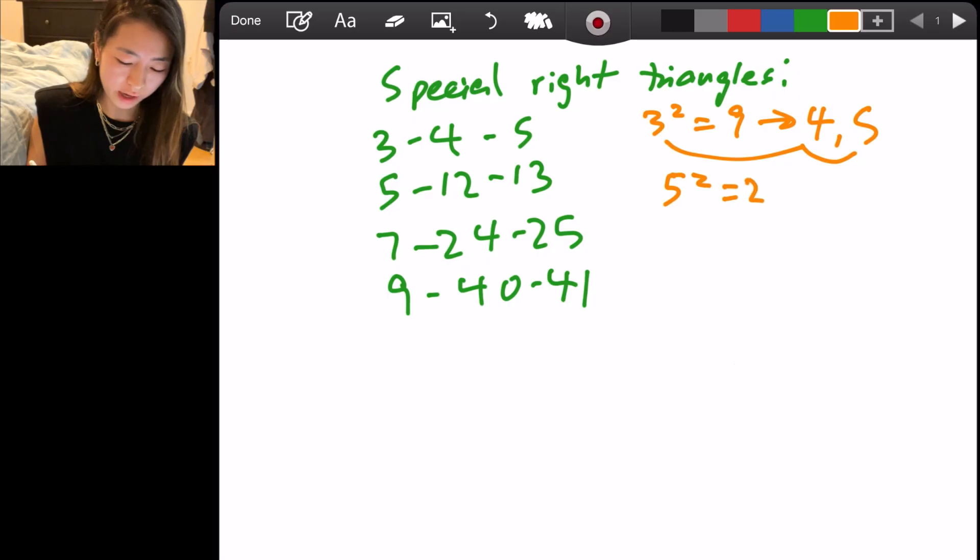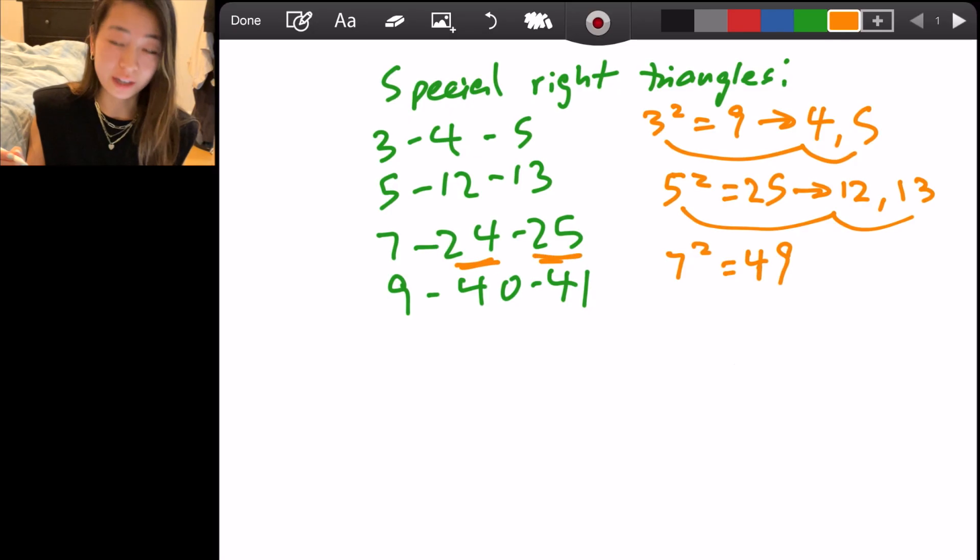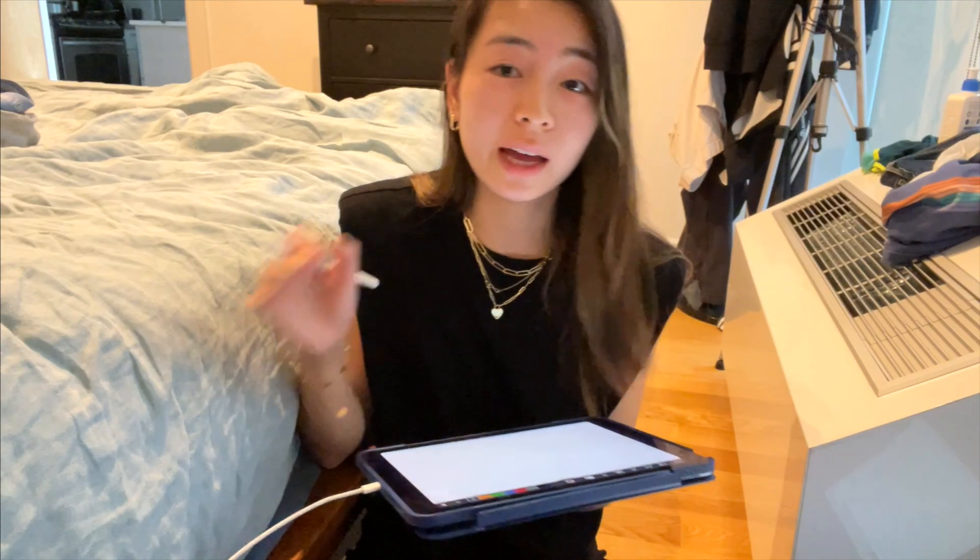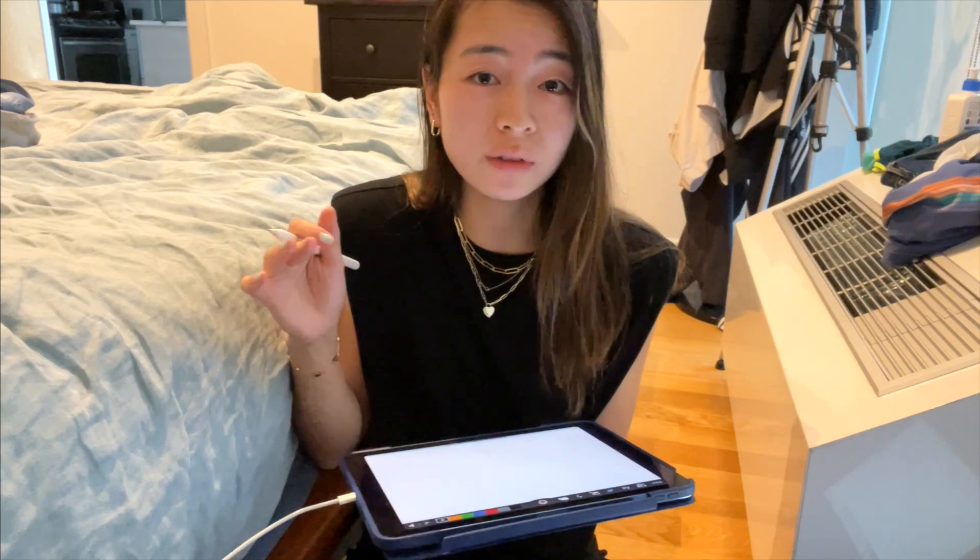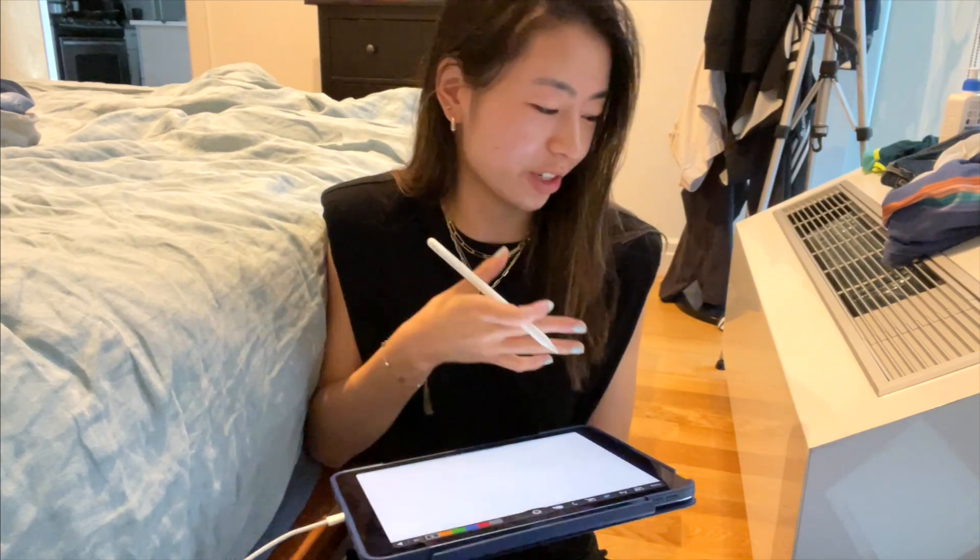5 squared is 25, split in half is 12.5, but we choose the numbers on either side. So we get 12 and 13, your 5, 12, 13 triangle. 7 squared is 49, and we split that in two. We get our 24 and 25, and naturally you know that 9 squared 81 becomes 40 and 41.